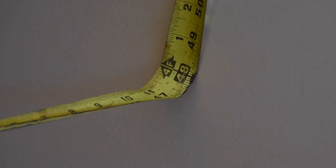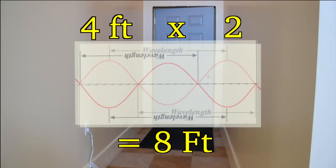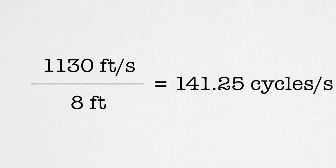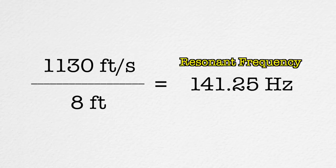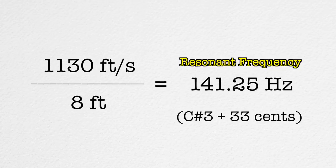I built this hallway almost exactly four feet wide, so we are going to use four feet as our measurement. Because we want to figure out the distance the sound waves travel from our mouth to the wall and back, we double this distance — so the wavelength has to travel eight feet. The average speed of sound we'll use is 1130 feet per second. Divide that by eight feet and you get 141.25 cycles per second, which translates to hertz. So our resonant frequency of this space is 141.25 hertz. Using a frequency calculator, 141.25 hertz is roughly a C-sharp 3. This should get us really close to the actual resonant frequency of this hallway.